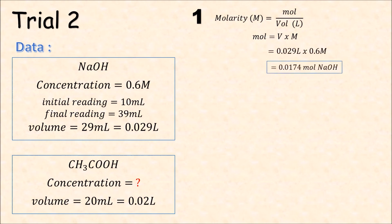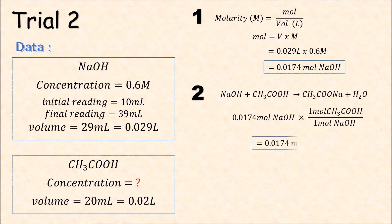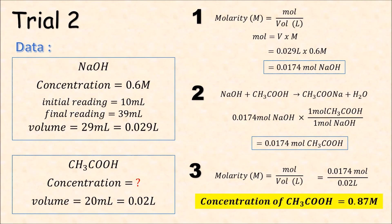Again, we will take the mol of NaOH. Then, how many mols of acetic acid? And get the concentration. This time, it is 0.0174 mol divided by 0.02 liter. That is 0.87 molar concentration of acetic acid.